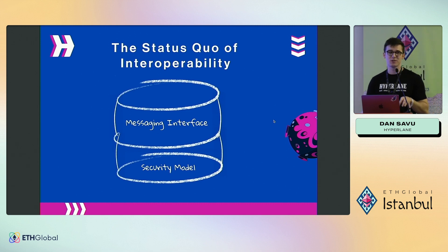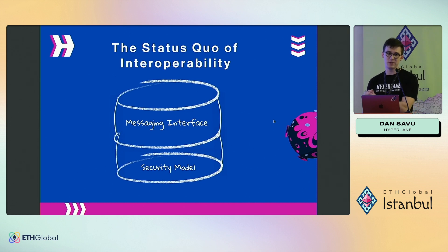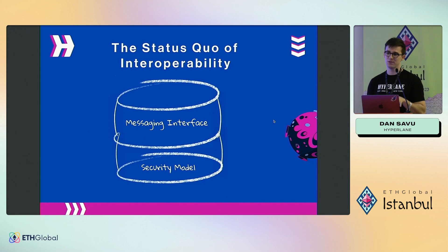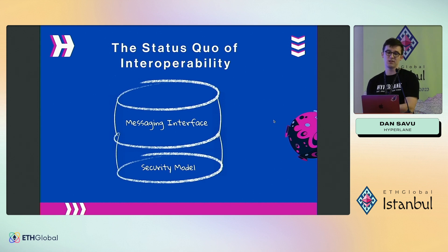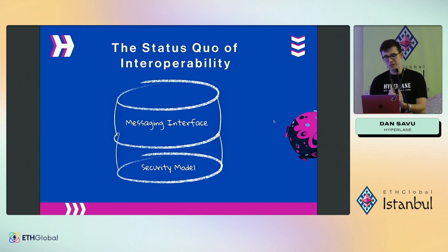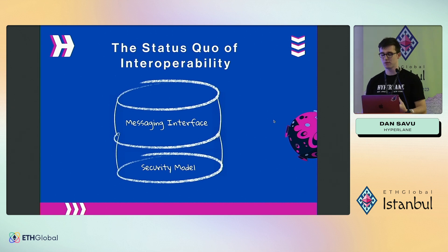Currently the status quo of interoperability is that if you integrate with a bridging provider's messaging interface, you are tied to whichever security module they choose to use. So later on, if your security matures or new products improve interchain security, you won't be able to just upgrade the security of your bridge without breaking your contracts' interface and having to release a new protocol version.